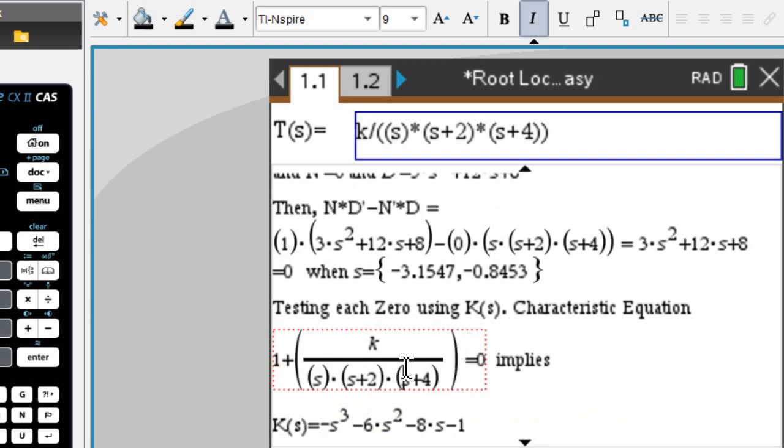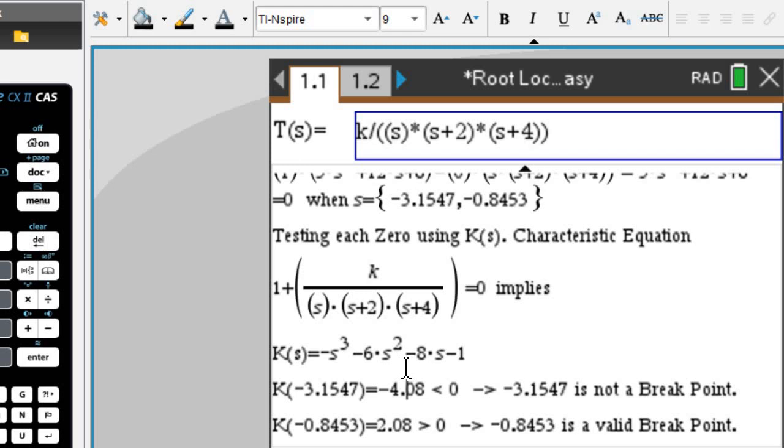Once we test those s values by plugging them into the characteristic equation, we find that there's only one valid break point at negative 0.84, which we saw earlier already.